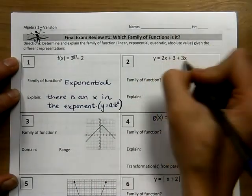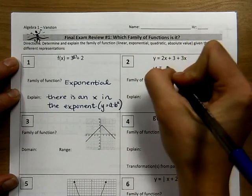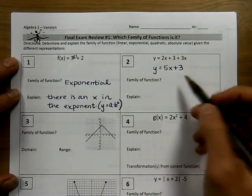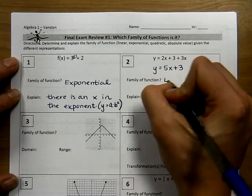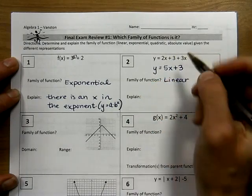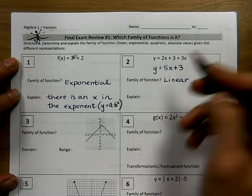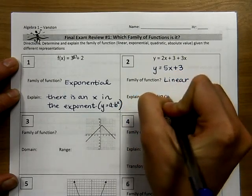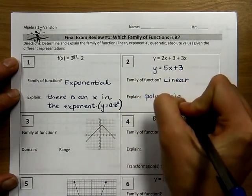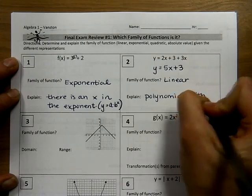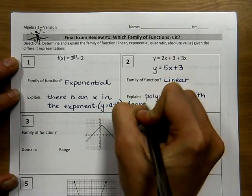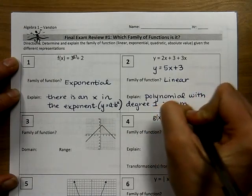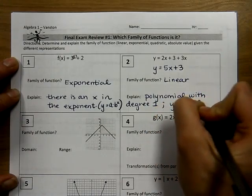Looking over here, I could combine like terms to make this look a little more simple, more familiar. This looks like it's in y equals mx plus b form, so this is linear. In other words, it's a polynomial with a degree of 1, or it's in the form y equals mx plus b.